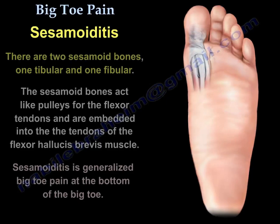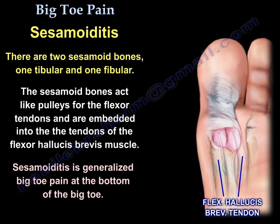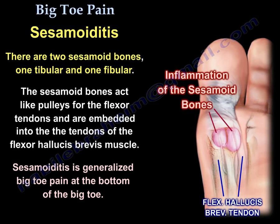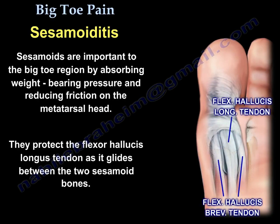There are two sesamoid bones: a tibial sesamoid and a fibular sesamoid. The sesamoid bones act like pulleys for the flexor tendons and are embedded into the tendons of the flexor hallucis brevis muscle. Sesamoiditis is generalized big toe pain at the bottom of the big toe. Sesamoids are important to the big toe region by absorbing weight-bearing pressure and reducing friction on the metatarsal head, and they protect the flexor hallucis longus tendon as it glides between the two sesamoid bones.